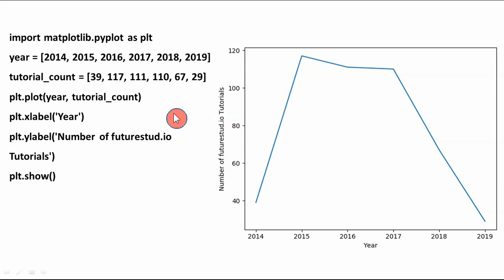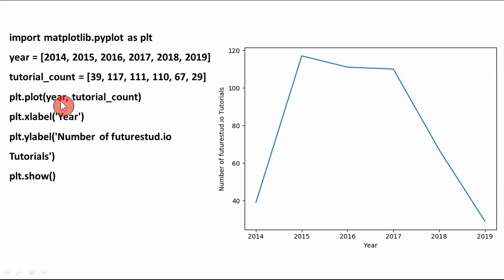The tutorial_count values are for the y-axis — these represent the number of tutorials. To draw a line graph we invoke the plot function: plt.plot(year, tutorial_count). Apart from x-axis and y-axis, we can also give other attributes such as color, linestyle, and linewidth. In this example only the x-axis and y-axis are provided as the 'year' and 'tutorial_count' arguments.